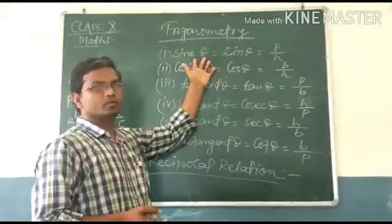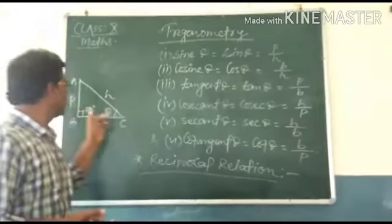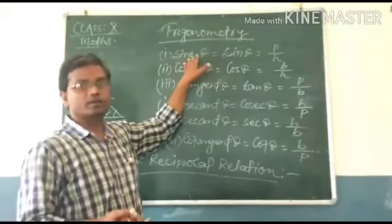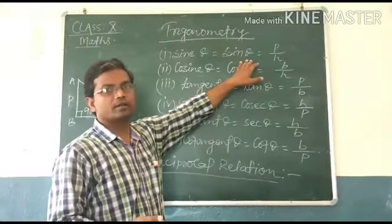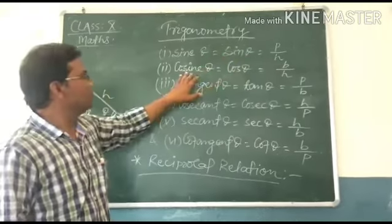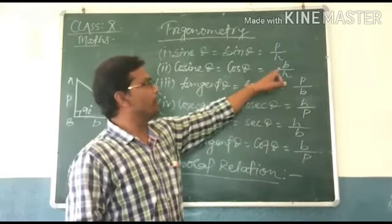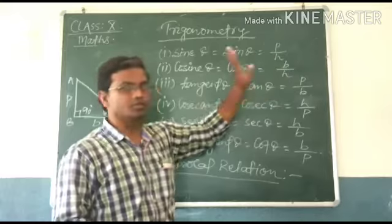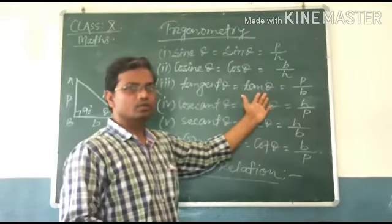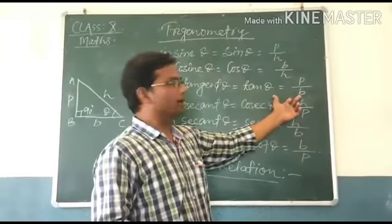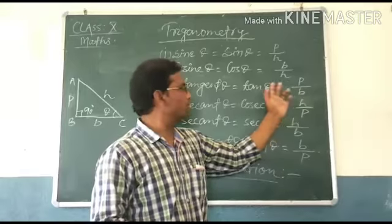First is sin theta. Sin theta, sin is the ratio of P and H. Perpendicular or hypotenuse ratio, called sin. And since we go to acute angle, it will be sin theta. Similarly, cos theta, short form is cos theta, which is equal to the ratio of B and H, B by H. Third is tangent theta, short form is tan theta, which is the ratio equal to P and B, P by B. Perpendicular by base is called the ratio of tan theta.